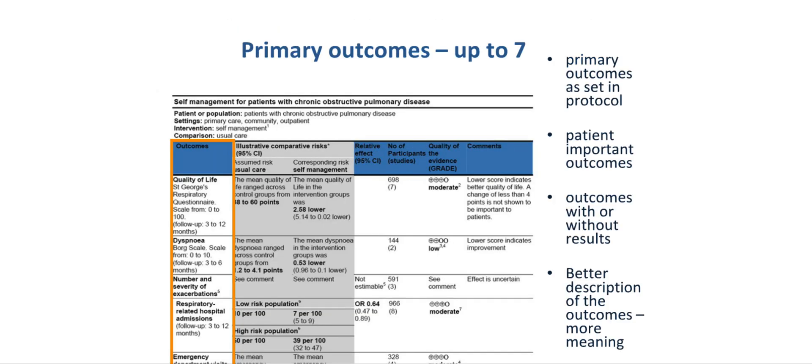Let us move to the results section that completes the formulation of the clinical question or healthcare question. The results section starts by listing all patient-important outcomes or population-important outcomes. It is recommended that not more than seven outcomes are listed in a Summary of Findings table. You will see that for this particular healthcare question, dealing with self-management for patients with chronic obstructive pulmonary disease, quality of life, difficulties breathing (that is, dyspnea), the number and severity of exacerbations, and respiratory-related hospital admissions are considered to be patient-important outcomes. These outcomes should be reported on.